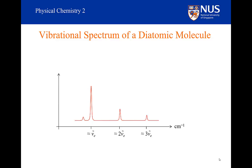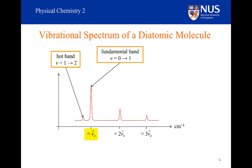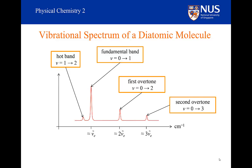So what will all this look like? If we were to look at a fairly large spectral region, this is the kind of idealised spectrum we would see for a diatomic molecule. We can have a hot band for V equals 1 to V equals 2 with a small intensity. Notice it is at a frequency smaller than our fundamental band, because the gap between the V equals 1 and V equals 2 levels is smaller than the gap between V equals 0 and V equals 1 levels. So the hot band occurs at a frequency smaller than that for the fundamental. The fundamental band occurs at a frequency of approximately nu_e. The first overtone will occur at a frequency that is approximately twice that of the fundamental, and the third overtone will occur at a frequency that is approximately three times that of the fundamental.